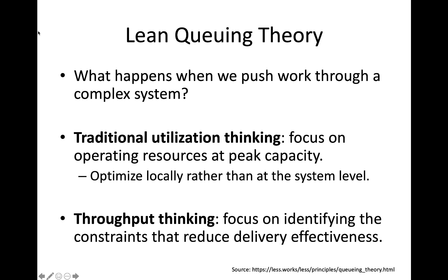Project managers focus on maximizing the efficiency of the people rather than focusing on the efficiency of the work itself and trying to get that work through a system of people. Lean and DevOps methodologies focus more on throughput thinking — identifying the constraints within our organization and minimizing them to improve the effectiveness of our delivery process. We think about efficiency at an organization level, at a system level, versus focusing on individuals and trying to improve the efficiency of individuals within the system.